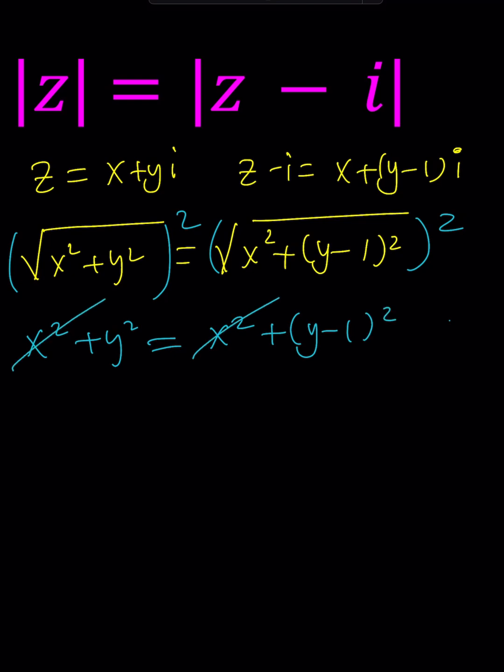X squared cancels out. And then we end up with Y squared equals Y minus 1 squared, which I can write as Y squared minus 2Y plus 1. Y squared also cancels out, leaving us a 0. And from here, we basically get Y equals 1 half.